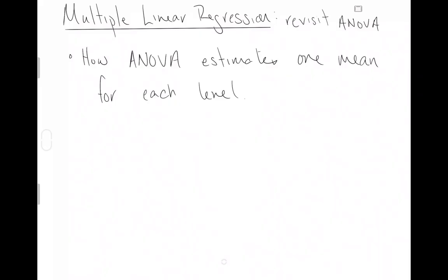This video is going to continue our series on multiple linear regression. However, the topic of this particular video is going to be about analysis of variance. We're going to revisit ANOVA to try to address how ANOVA estimates one mean for each level. If we can understand this, I think we're going to have a huge advantage on understanding multiple linear regression and the options we have within that framework for modeling the world around us.